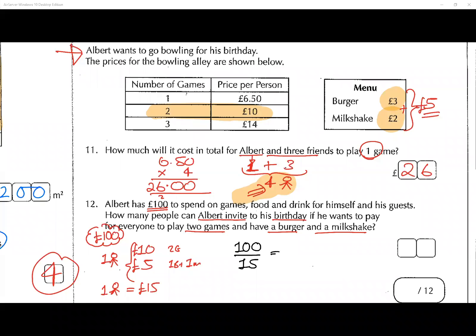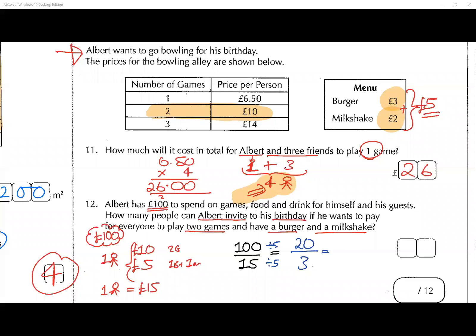100 divided by 15 — using the cancelling technique, divide both by five: 100 divided by 5 is 20, and 15 divided by 5 is 3. What's 20 divided by 3? You can't get a whole number — three times six is 18, with 2 left over. So you've got enough for six people.